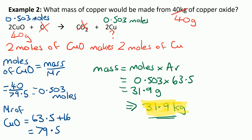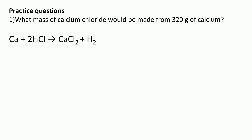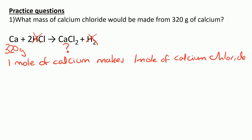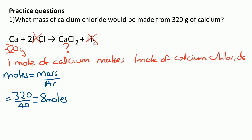So now it's time for you to have a go. Read the practice question, have a go on a piece of scrap paper, and then resume the video to see how you got on. First we annotate the equation — we've got 320 grams of calcium and we're looking for the mass of calcium chloride, so we can ignore the HCl and the H2. We write a sentence to describe the ratio: 1 mole of calcium makes 1 mole of calcium chloride. Moles is mass over AR, so the moles of calcium is 320 over 40, which is 8 moles. We write that above the equation — 8 moles of CaCl2.